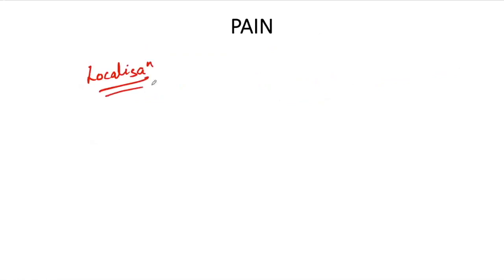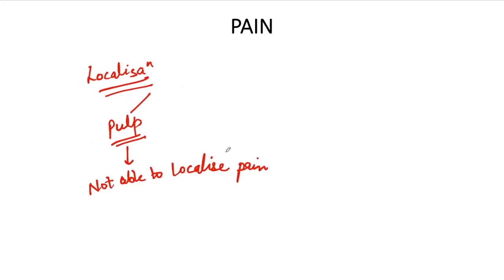During the history of pain, we need to ask whether the patient can localize the pain or not. This means whether a patient can identify the culprit tooth or not. If the disease is in the pulp, the patient will not be able to localize the pain. The patient will say they have generalized pain in the upper or lower right or left side of the teeth, but will not be able to identify the particular tooth. But if the problem is in the periodontium, the patient will be able to localize the pain.